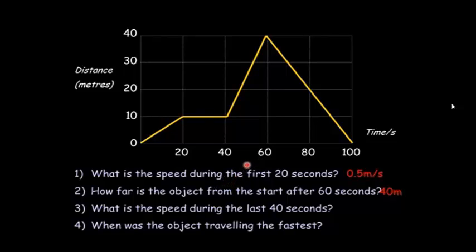The third question: what's the speed during the last 40 seconds? Make sure that you're taking the change in distance. So it's going from 60 to 100 in a time of 40 seconds, so it's 40 meters in 40 seconds, so the answer is 1 meter per second. And the final question there: when is the object traveling the fastest? You're looking for the steepest line. The steepest line is between 40 and 60.